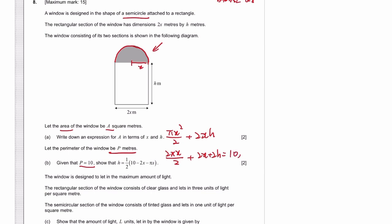Which means the 2 cancel out. So 2h is 10 minus 2x minus πx. So h is half of that.